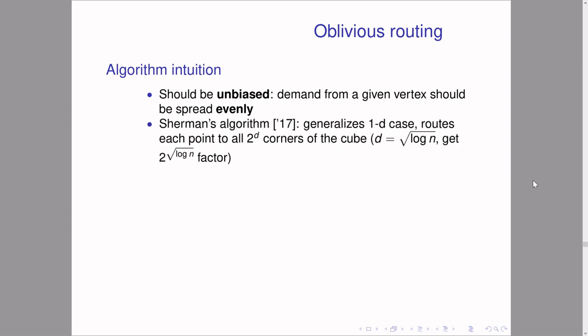Sherman's algorithm from 2017 generalizes this to higher dimensions: instead of routing left and right, his algorithm routes to all 2^d corners of the cube the point is in. Unfortunately this incurs a 2^d factor, so Sherman sets d to sqrt(log n) and gets a 2^(sqrt(log n)) factor in the final running time.